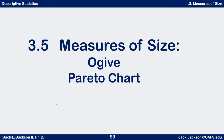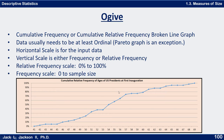So first of all, what is an ogive? An ogive is a relative frequency broken line graph. Here is the data for relative frequencies of the ages of U.S. presidents at their first inauguration.